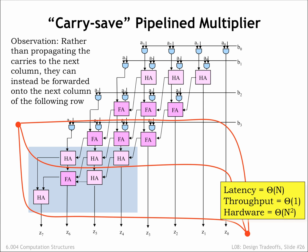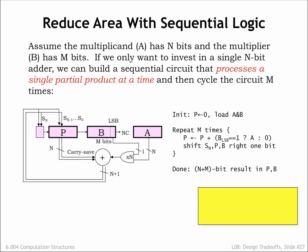We'll use the carry-save technique in our next optimization, which is to implement the multiplier using only order N hardware. This sequential multiplier design computes a single partial product in each step and adds it to the accumulating sum. It will take order N steps to perform the complete multiplication.